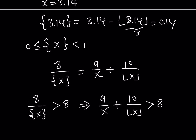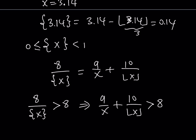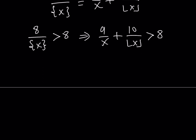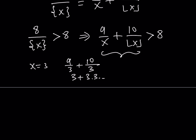With floor value equations, inequalities play an important role. Looking at this inequality perspective: if x equals 3, we get 9 divided by 3 plus 10 divided by 3, which gives 3 plus 3.3 repeating — not greater than 8. For any x greater than or equal to 3, the right-hand side only gets smaller, so it will never exceed 8. We can safely say that for x greater than or equal to 3, there are no solutions — giving us a nice upper bound.